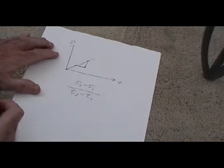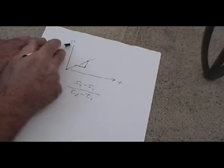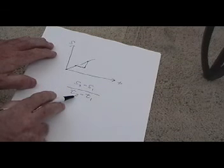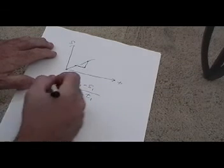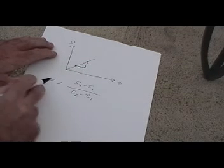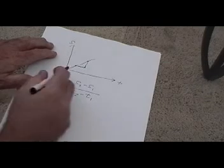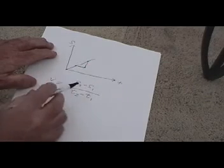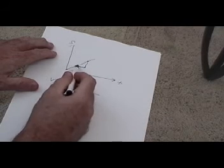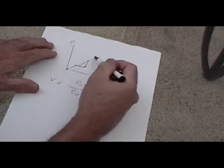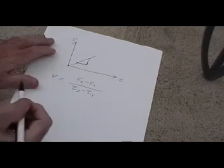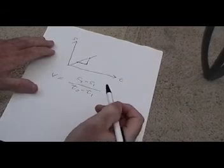That gives us the slope, or the tangent, of this line. If s is distance and t is time, then this is distance divided by time. As you know, distance divided by time is velocity. So the velocity of this equation is the slope of the line. If we can find the slope of this line by differentiating, we can get the velocity.